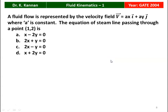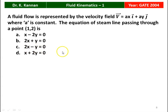Next question from the 2004 question paper. A fluid flow is represented by a velocity field V vector equal to AX i-vector plus AY j-vector, where A is a constant. The equation of the stream line passing through the point (1, 2) — options are: x minus 2y = 0, 2x plus y = 0, 2x minus y = 0, or 2x plus 2y = 0. The correct answer is option C: 2x minus y = 0. We will see how in the next slide.